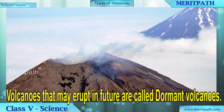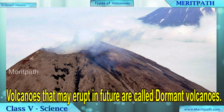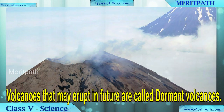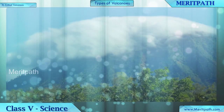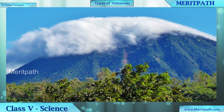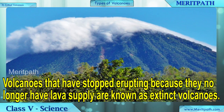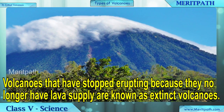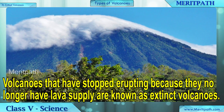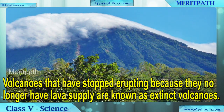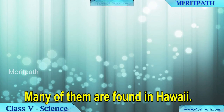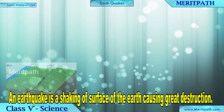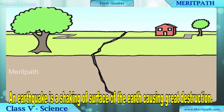Dormant volcanoes are volcanoes that may erupt in the future. Extinct volcanoes are volcanoes which have stopped erupting because they no longer have a lava supply. An earthquake is the shaking of the surface of the Earth causing great destruction.